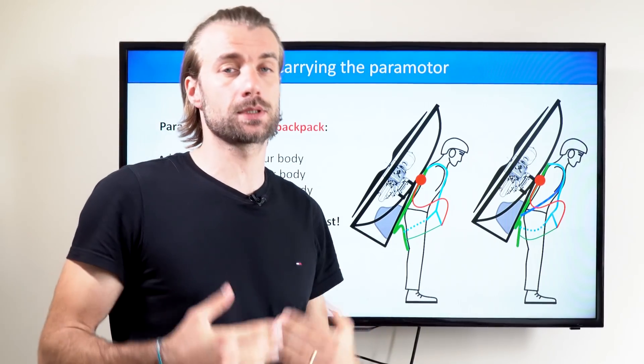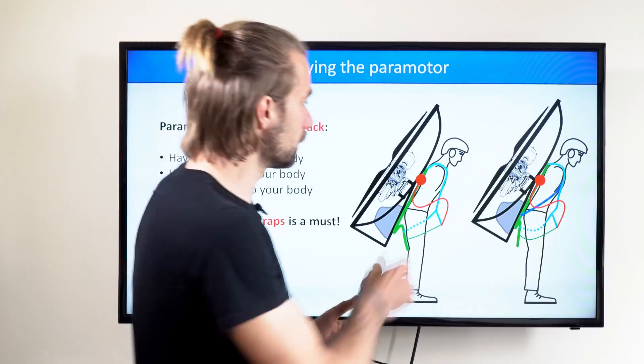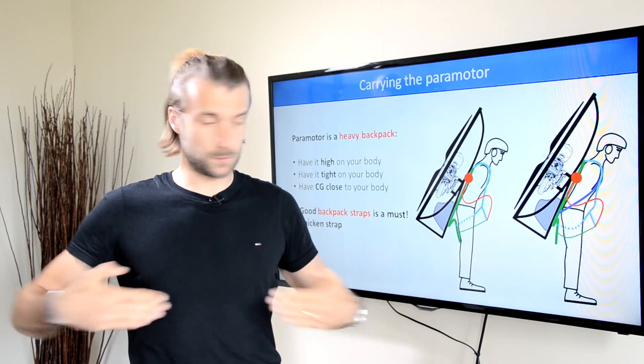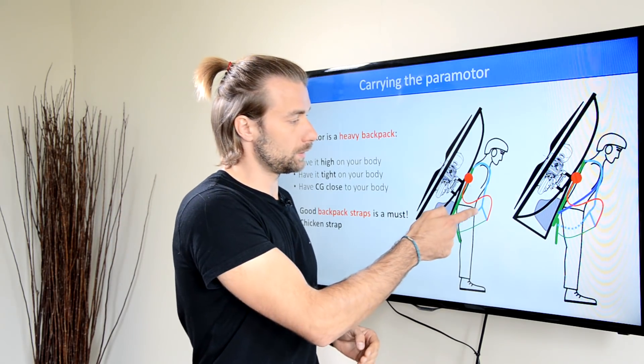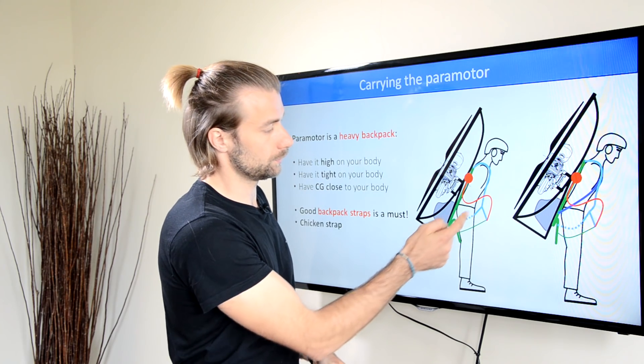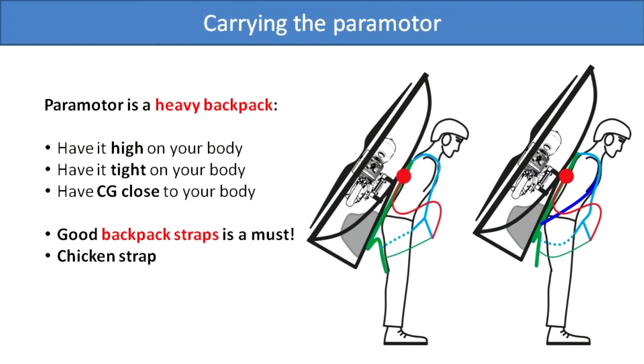I've seen some harnesses on paramotors that simply copy the routing of the straps just like on paragliding harnesses. You have the shoulder strap that connects to the strap in front of your body, and then this strap is connected to the leg straps that go between your legs and connect to the seatboard.